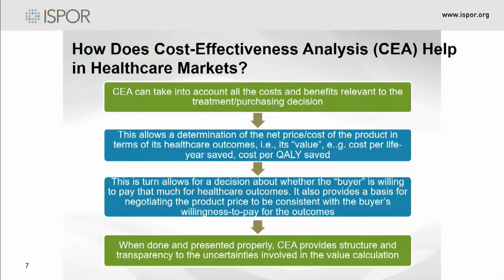This is where cost-effectiveness analysis was introduced, probably 40 to 50 years ago, to try to help get to a price. In cost-effectiveness analysis, we take into account the costs and benefits relevant to the treatment or purchasing decision, which gives you a net cost of the product — the cost per life-year saved or the cost per quality-adjusted life-year saved. This lets buyers think about whether they're willing to pay that much for the healthcare outcomes and provides a basis for negotiating price. CEA also provides structure and transparency to the uncertainties involved in the value calculations, so different payers and consumers can review how it's done.